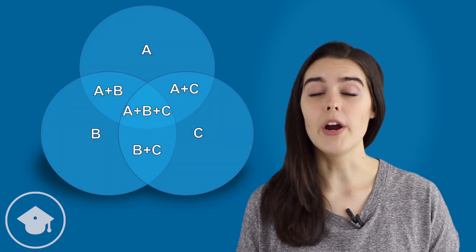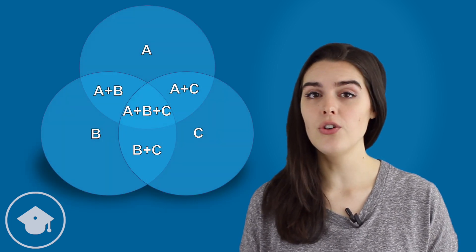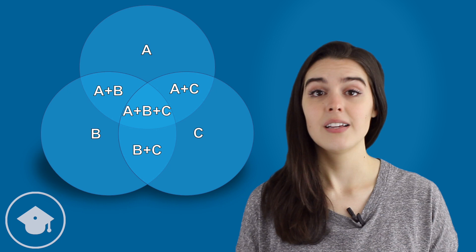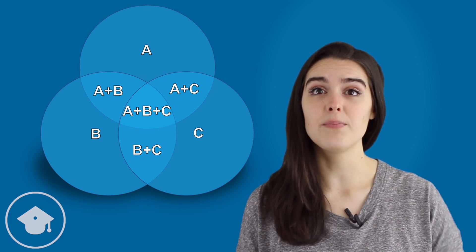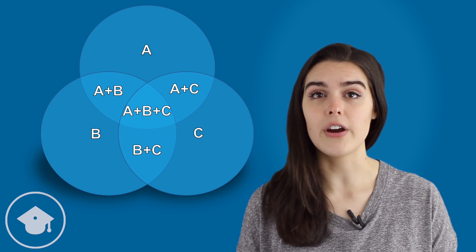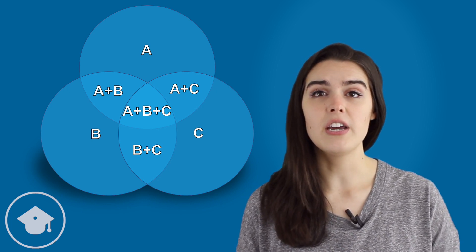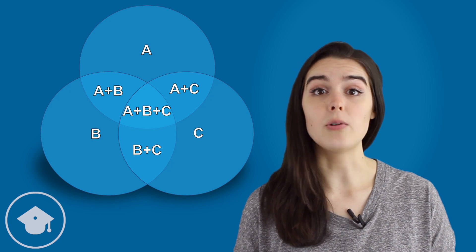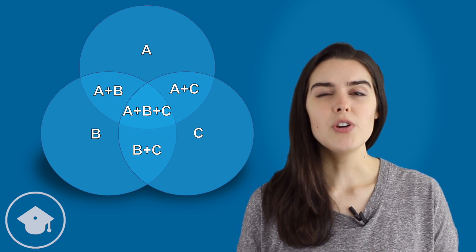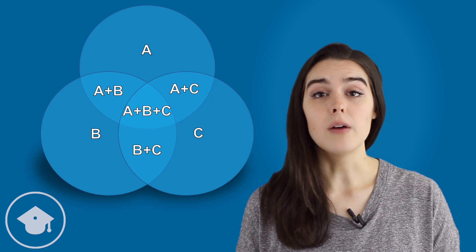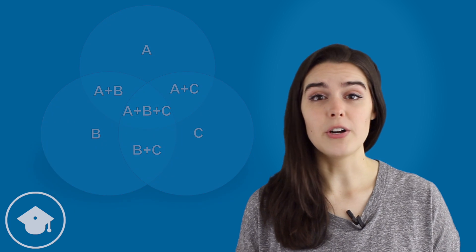If we have an overlapping sets problem with three traits, our best bet is to set up a Venn diagram where each circle represents one trait, then build equations based on that diagram. Be very careful to avoid double counting. Three-trait problems, however, are pretty rare and unlikely to appear on your test, so the double matrix is going to be the tool you'll use most.